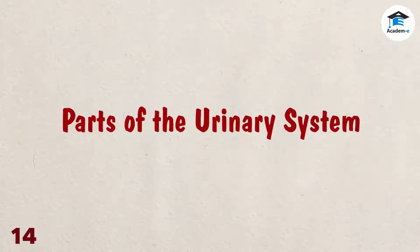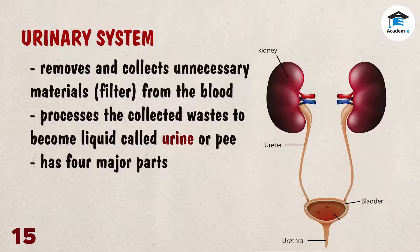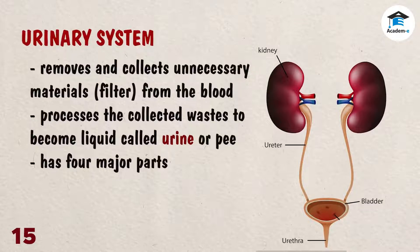Parts of the urinary system. The urinary system removes and collects unnecessary materials from the blood and processes them to become liquid waste called urine or pee. It has four major parts that help perform the tasks of this body system.